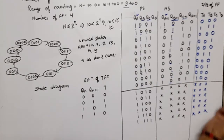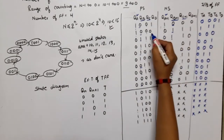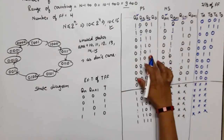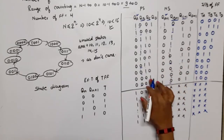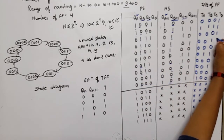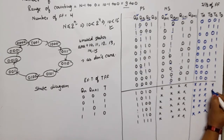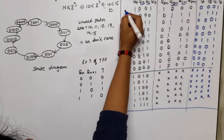For TD, we observe QD and QD+1. There are changes at every transition — 1 to 0, 0 to 1 — alternating throughout all the counted states. So all valid states give TD = 1, and the unused states are don't cares. This completes the excitation table.